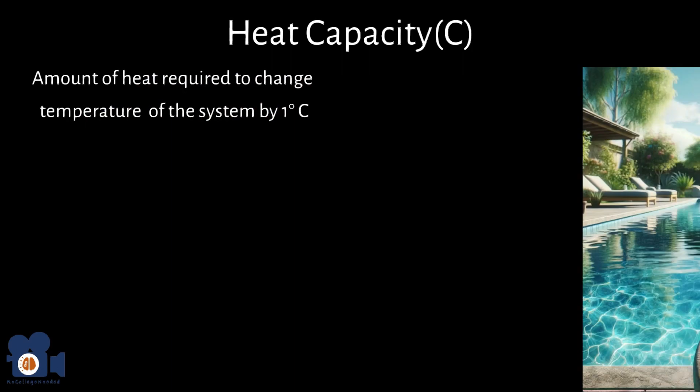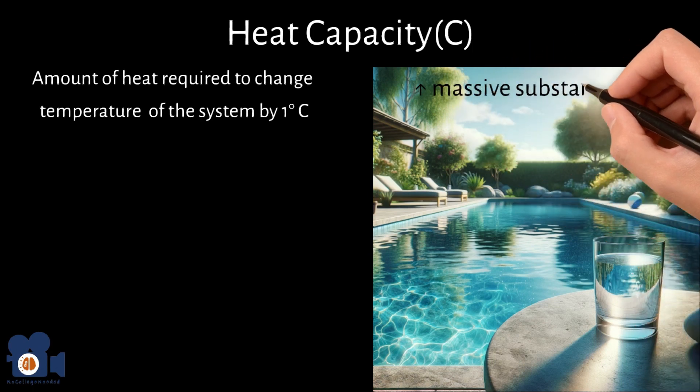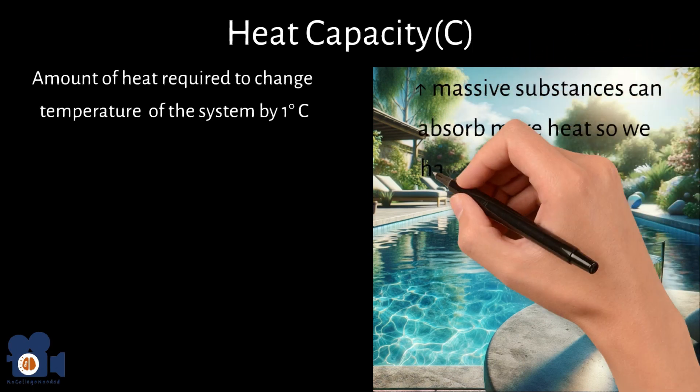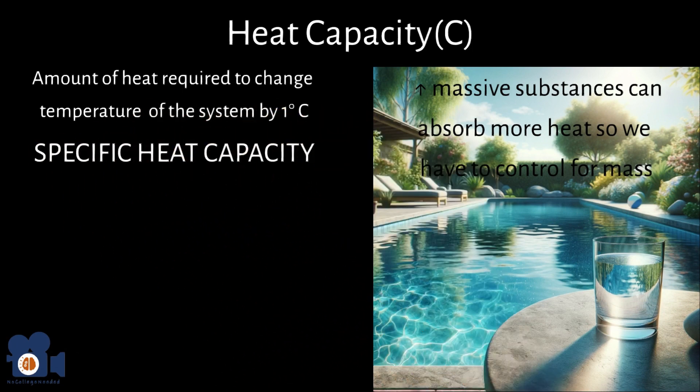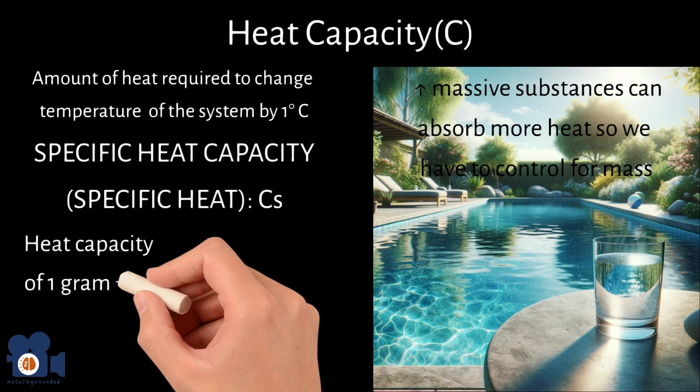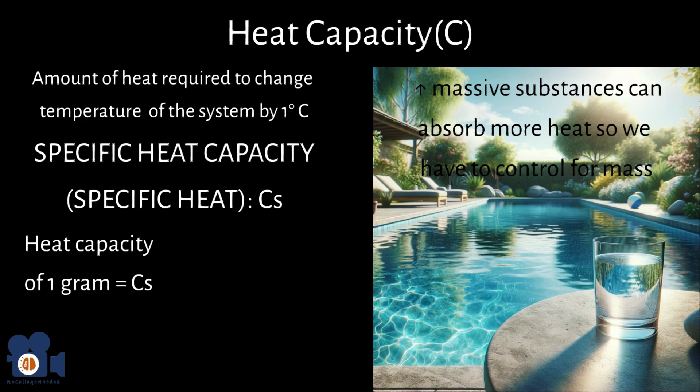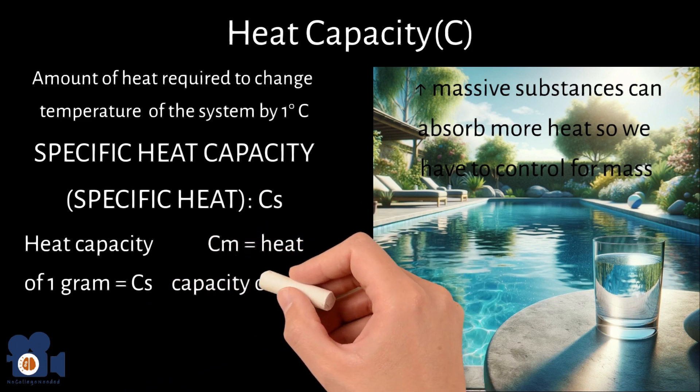Thinking about it deeper, a glass of water heats up much higher throughout the day than a swimming pool, right? This is because more massive substances can absorb more heat, so we have to control for mass. Scientists came up with a refined term called specific heat capacity or specific heat, which is the heat capacity of one gram of the substance denoted by Cs. There is also molar heat capacity, Cm, that is the heat capacity of one mole of substance.